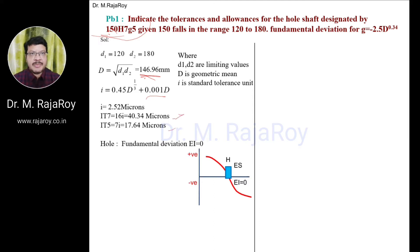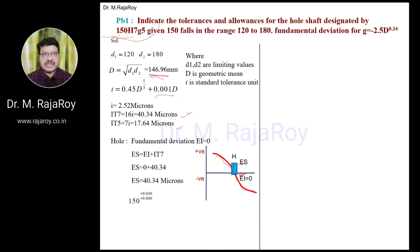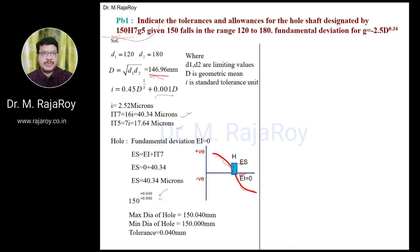Now consider the hole. The fundamental deviation for the hole EI equals 0, because the hole is indicated with H7. If you observe the graphical representation of tolerances, H is located such that for H, the lower deviation EI will be 0. Fundamental deviation means whichever of EI and ES is nearer to the zero line — that is called the fundamental deviation. Here EI is on the zero line, so the fundamental deviation becomes EI. To calculate ES, use the equation: ES equals EI plus IT7. ES equals 0 plus 40.34, giving the ES value. Convert ES and EI values into millimeters by dividing by 1000, then you get the maximum hole and minimum hole.